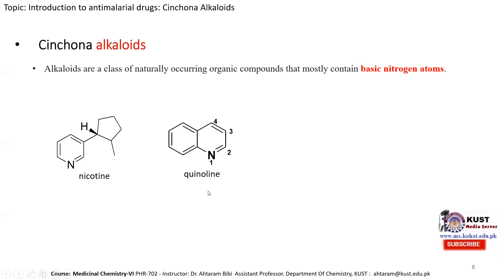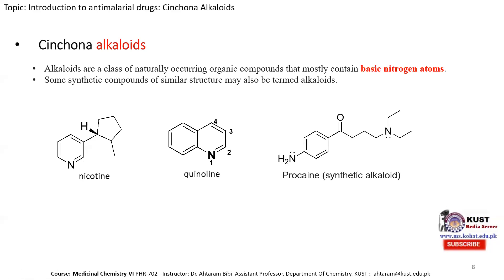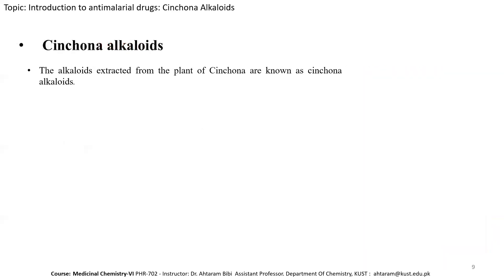Some synthetic compounds of similar structure may also be termed alkaloids. For example, procaine contains two basic nitrogen atoms and is a synthetic alkaloid. Cinchona alkaloids are alkaloids extracted from the cinchona plant. So, the basic nitrogen-containing compounds extracted from the cinchona plant are known as cinchona alkaloids.